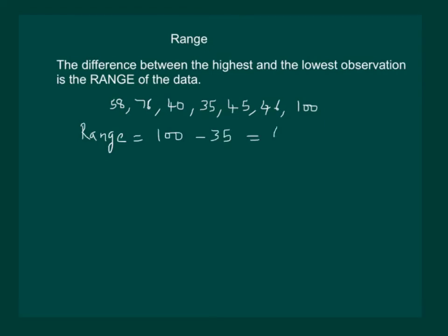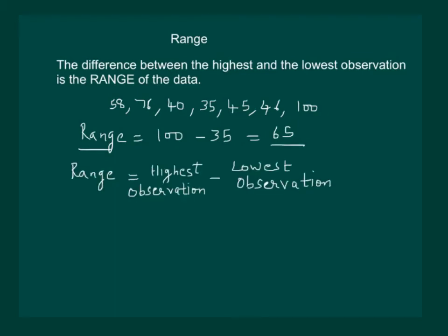Which gives us 65 as the range of the observations. That is, range is equal to highest observation minus the lowest observation.